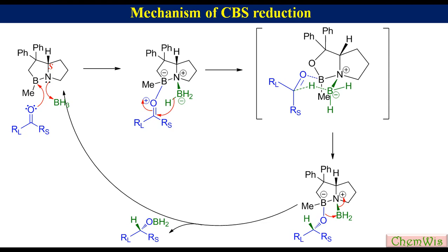This chiral alkoxyborane, after acidic workup, produces one enantiomer of the alcohol as the major product. In this reduction, we need a catalytic amount of CBS catalyst because borane is sufficiently reactive to reduce the ketone only when complexed with the nitrogen atom. The rest of the borane just waits until a molecule of the catalyst becomes free.